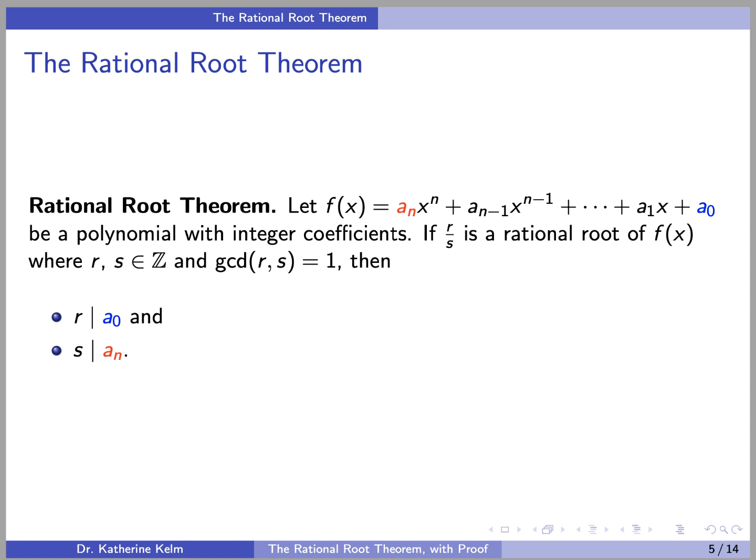So here's the Rational Root Theorem. It says: let f be a polynomial with integer coefficients. If r over s is a rational root of f, where r and s are integers and r over s is in lowest terms, then r must divide the constant term and s must divide the leading coefficient. In other words, by looking at the divisors of the constant term and the leading coefficient, we can narrow down the number of possible rational roots a polynomial has, so that we only have to check a hopefully short list.